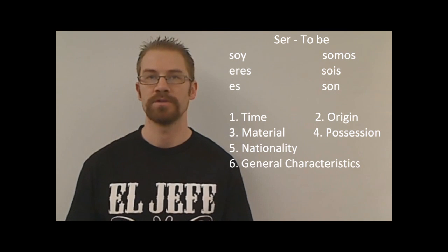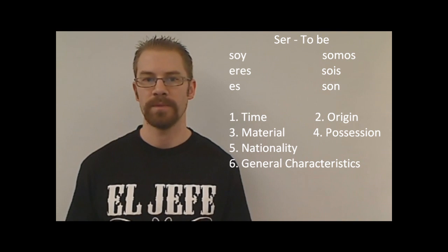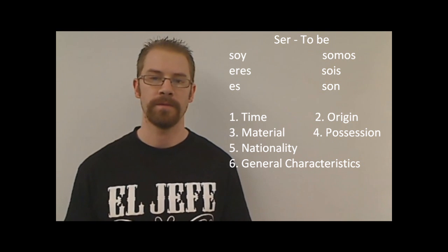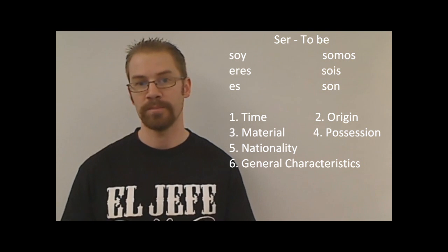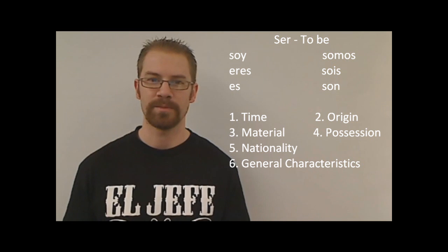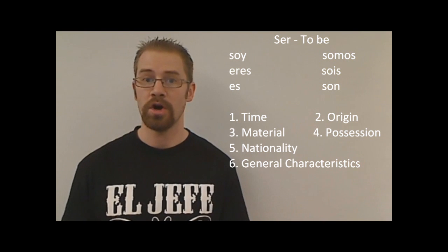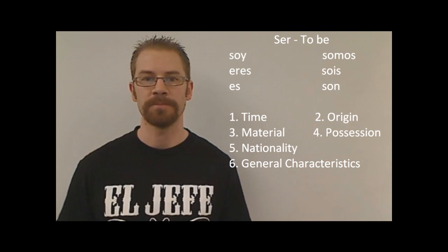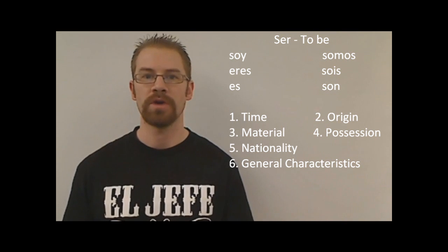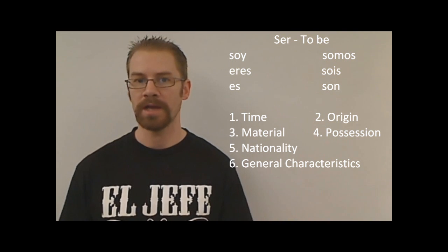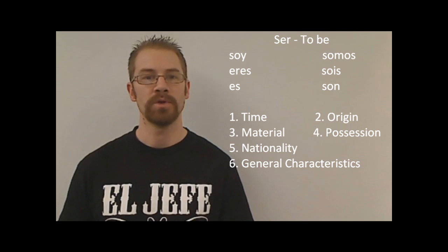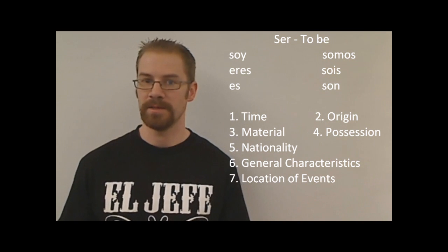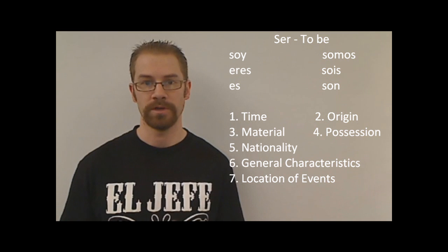Next: general characteristics of someone or something that can be seen as kind of permanent. Ella es alta (she's tall), él es bajo (he's short), somos inteligentes (we are intelligent). When describing what someone is like, use ser. Also, location of events — el baile es en el gimnasio, the dance is in the gym — we use ser.